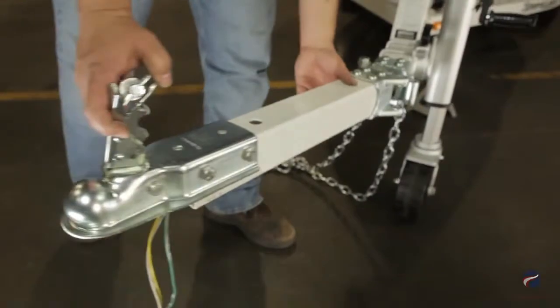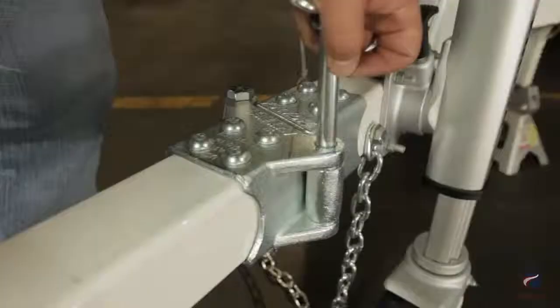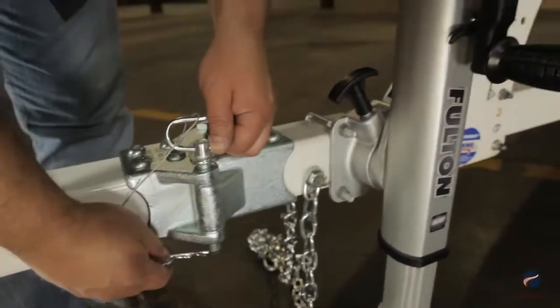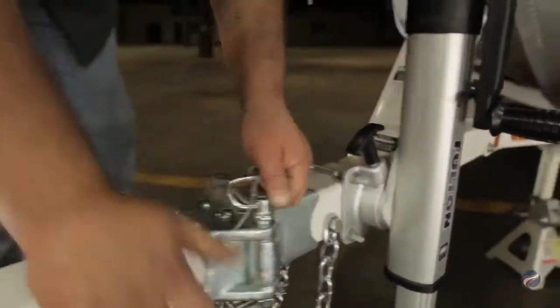Close the swing tongue, be certain not to pinch the wires, and lock into place with the hinge pin. You are now ready to tow.